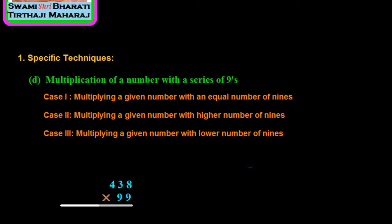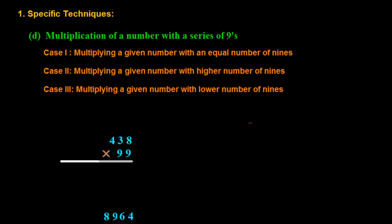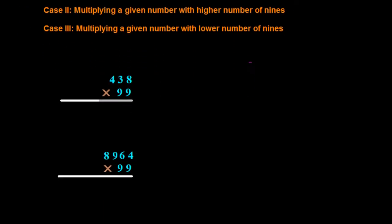Let me explain what this means. Here you can see we have to multiply 438 with 99. This means the digits in the multiplier are more than the digits in the series of 9s — there are only 2 digits in the series of 9s, but 3 digits in the multiplier 438.